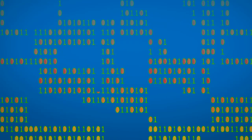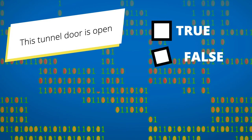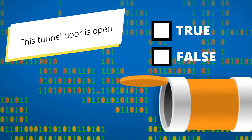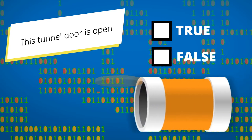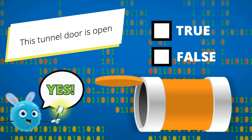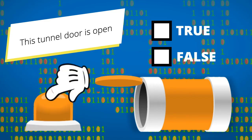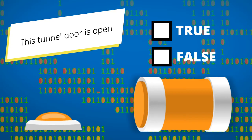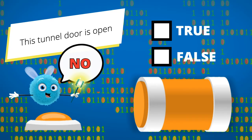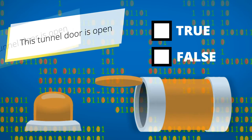Let's break this down and look at the last example from trivia. The tunnel door is open. Based on this image, is the tunnel door open? Yes, so the boolean value is true. But what if there were a way I could click a button and shut the tunnel door? Now the situation has changed. Is the door open? No, it's not. So the boolean value is false. Notice how the statement or question stays the same, but the boolean result can change based on the situation.